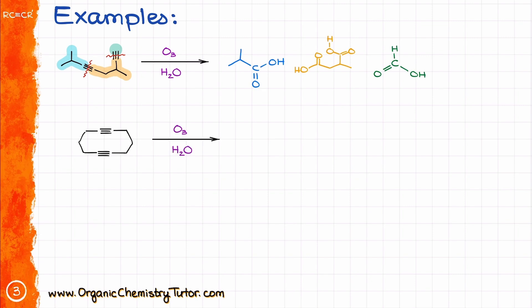Similarly, if we have a cyclic alkyne, let's say like this one, we'll likewise cut through both of those triple bonds, making two equivalents of the same carboxylic acid.